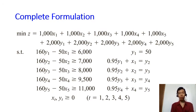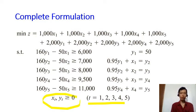As usual, we add sign restrictions to complete the formulation: all variables must be non-negative for all months, so for t = 1, 2, 3, 4, 5, xt ≥ 0 and yt ≥ 0.